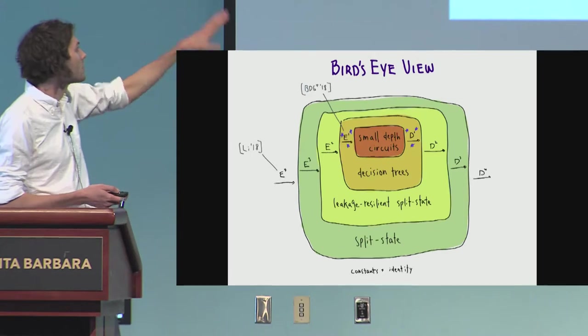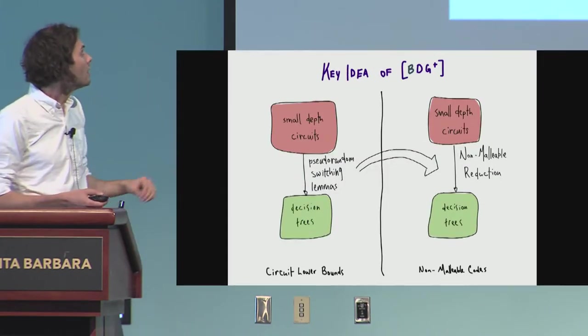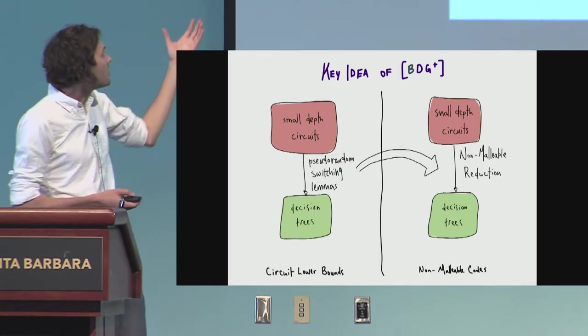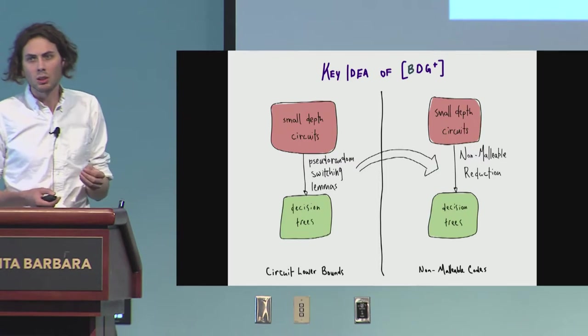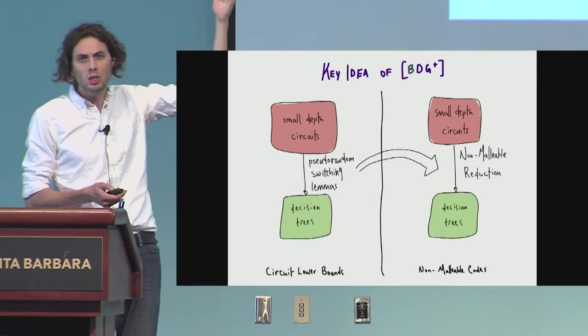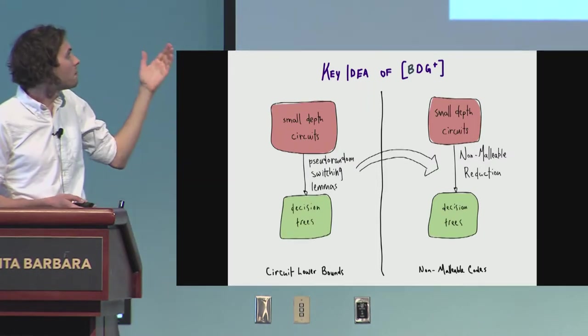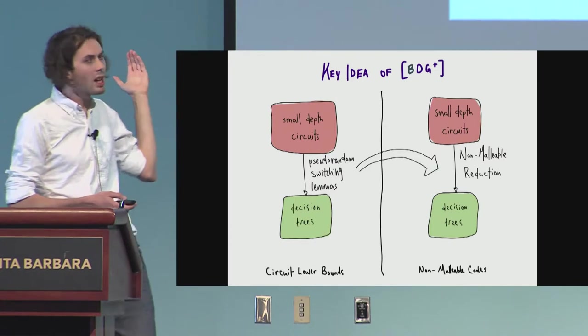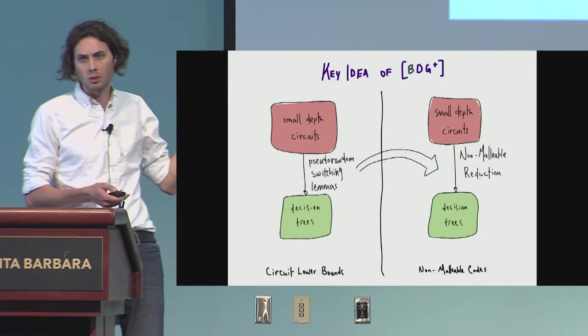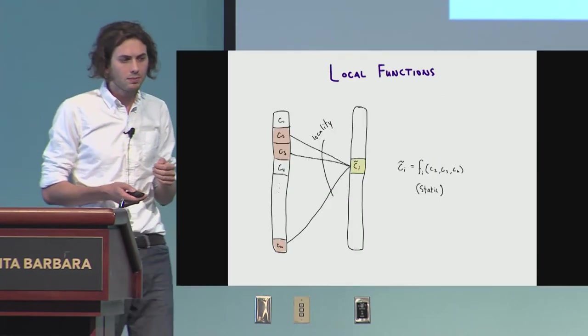So let's zoom in. Before I tell you what all these other things even are, let's zoom in on this small-depth circuit thing. So this is a reduction from the prior work. The main idea here is we noticed that in the circuit-lower-bound literature, you have this machinery switching lemmas for reducing small-depth circuits to decision trees. And so the rest of this work was taking this machinery and turning it into a non-malleable reduction.